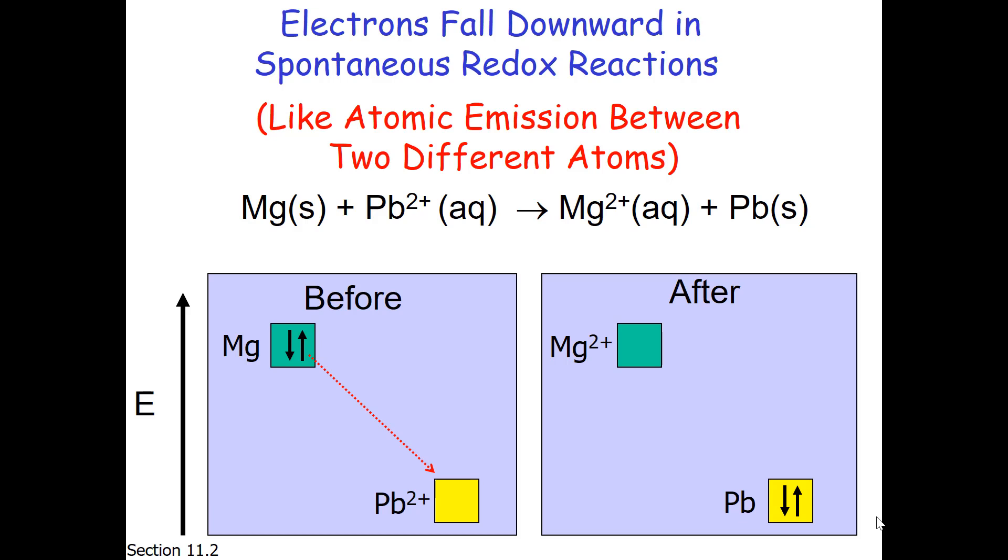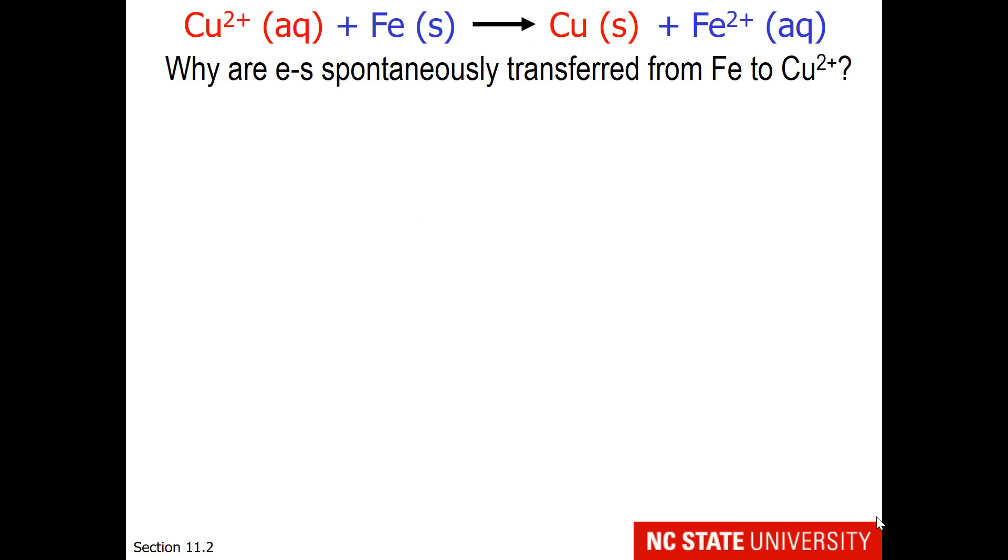This gives magnesium 2 plus a positive charge because two electrons have been lost. On the other hand, lead 2 plus has gone to lead 0 because two electrons have been gained.